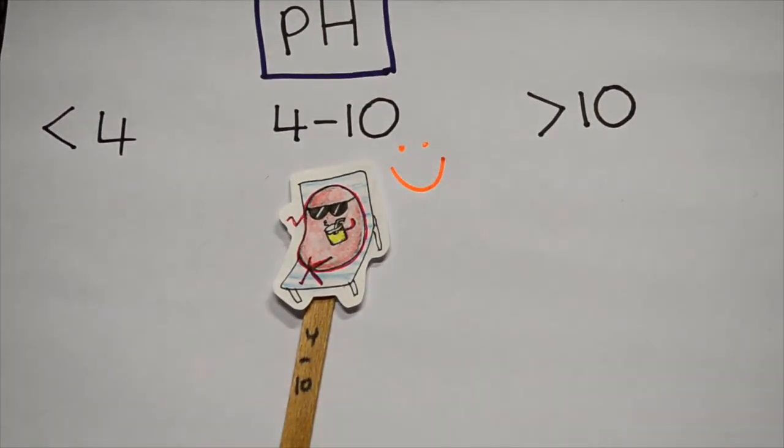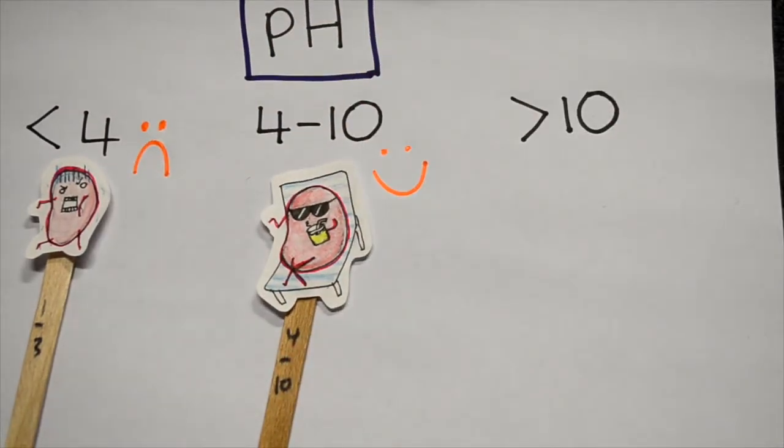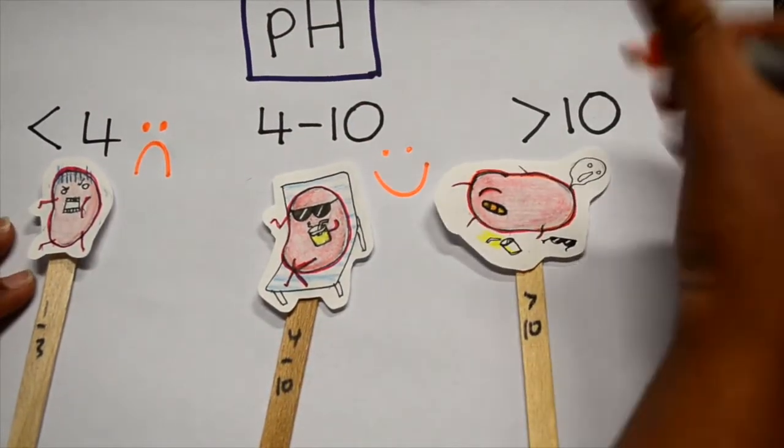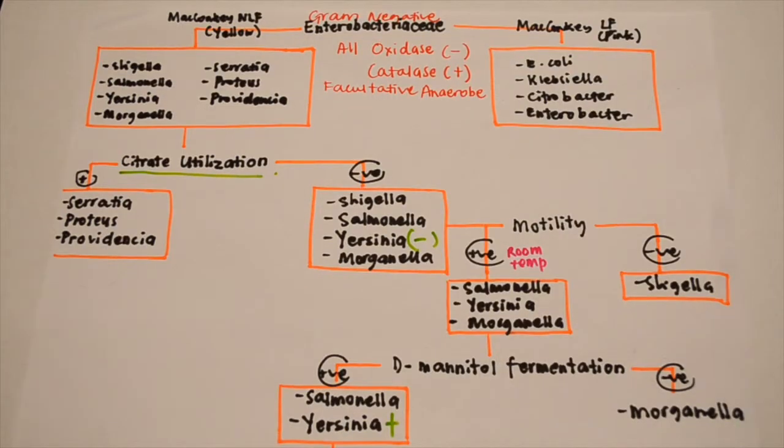At a pH less than 4, its growth decreases, and when the pH becomes too alkaline, more than 10, it will possibly die. Now let's take a look at the vital elements of this flowchart that helps us identify the bacterium.